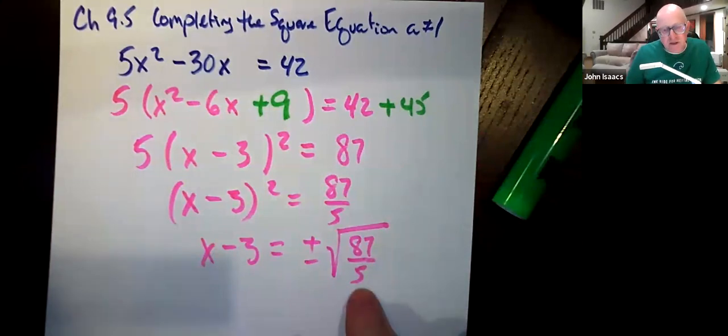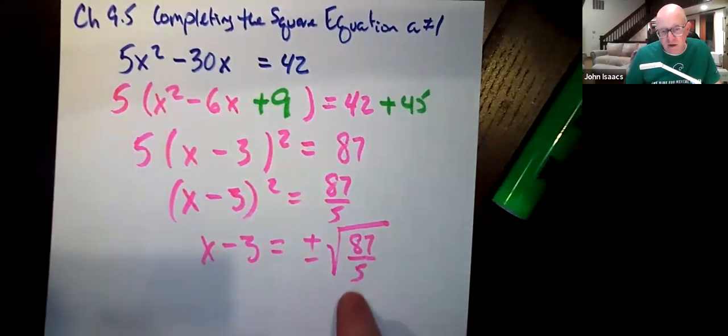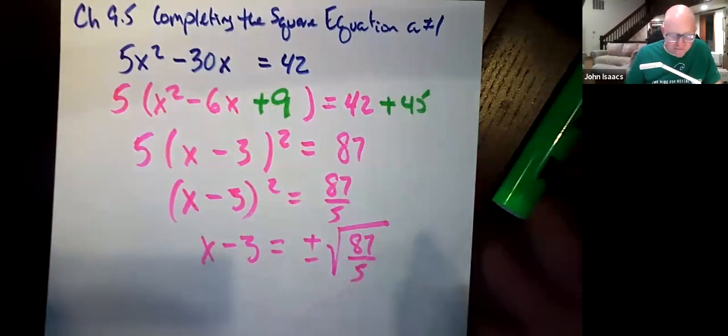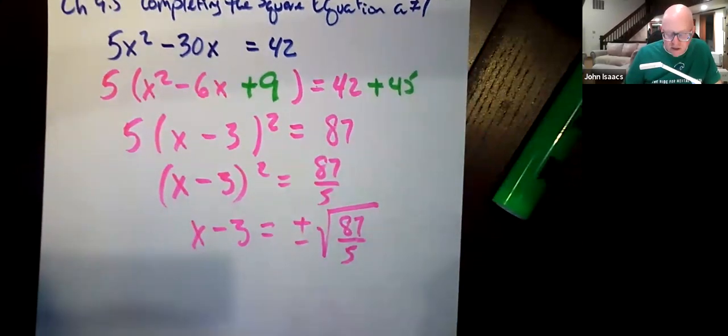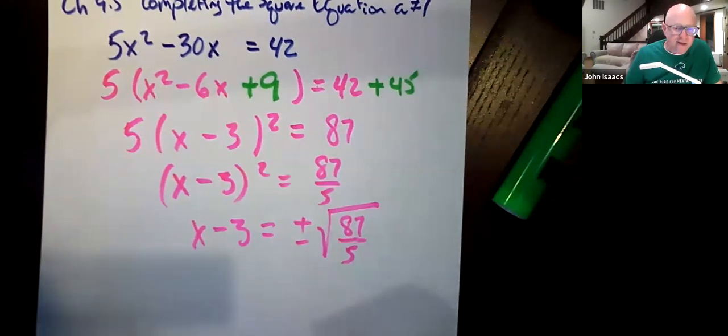Now you should rationalize the denominator here, I'm not going to, it's too messy, I'm just not going to bother, but you should get that 5 out of the denominator by rationalizing it like you learned in chapter 10. That's something your geometry teachers will go over with you.